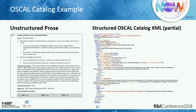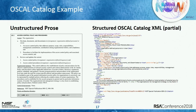Here's an example of what an OSCAL catalog looks like. This is an XML example — we also have a JSON representation. A catalog has a title; controls can be grouped into groups, like an access control family group. Every control has a title, a list of associated parameters, and you can define arbitrary properties. You can define statements using something like HTML markup, which can be rendered for humans. It can also include guidance and references.